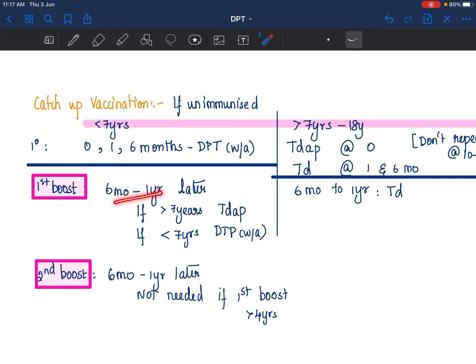By this time, if the child is above 7 years, it's reduced dose of diphtheria. And if the child is less than 7 years, then same as your primary vaccine series. For second boost, if the first boost was given after 4 years, then it is not required. If it was less than 4 years, then same as above.